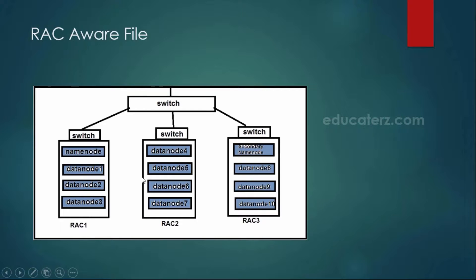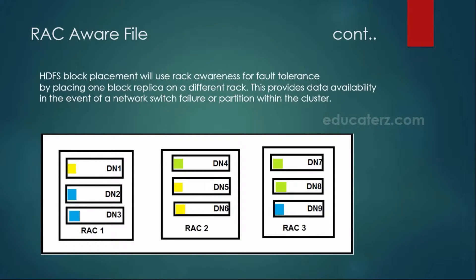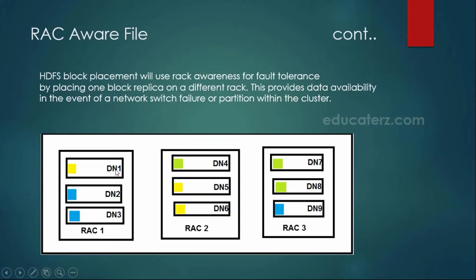Your network administrator sets up these racks with machines inside them. The purpose of the rack aware file is to be used while placing your blocks — this is called the data placement policy. With a replication factor of 3, you need 3 copies of the same block. The first block is stored in data node 1. As per the block placement policy, the same block must be copied into the other two machines as well.